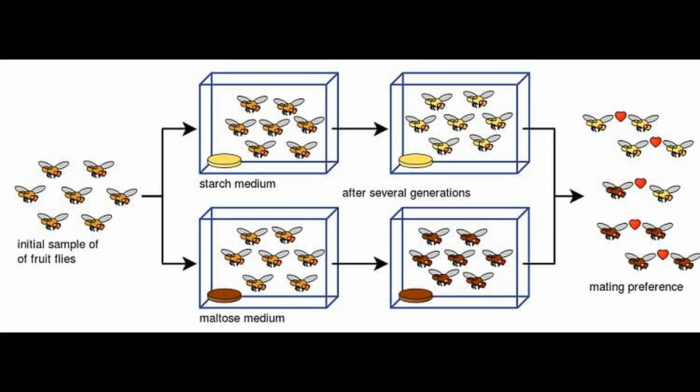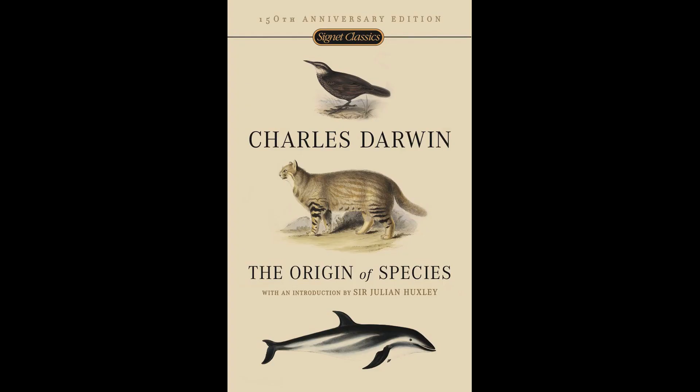In Linnaeus' day, speciation, or the transmutation of species, wasn't a concept of consideration. Every organism was created in its specific species where only slight variations were allowed. By the time Charles Darwin published On the Origin of Species in 1859, Linnaeus' taxonomic system was already groaning under the constantly growing number of known organisms.